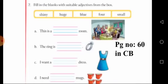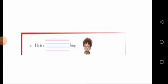Now fill in the blanks with suitable adjectives from the box. This is a shiny room. The ring is huge. I want a blue dress. I need four mugs. He is a small boy. Everyone has completed this.